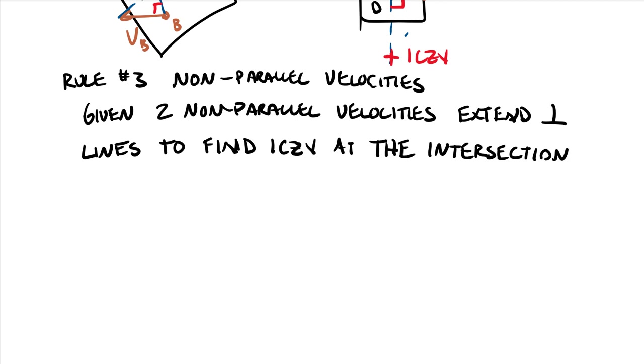So this could look, so here's our rigid body, here is point A, here is point B, adding some velocities, let's say we have a velocity going up here VA, VB, let's go over this direction.